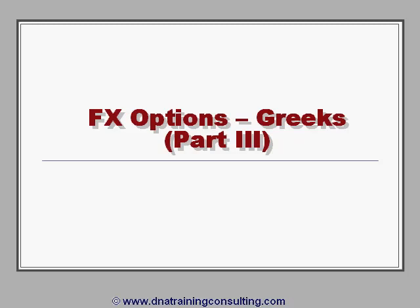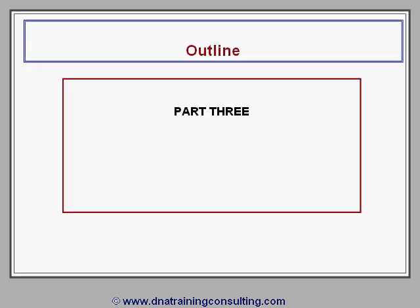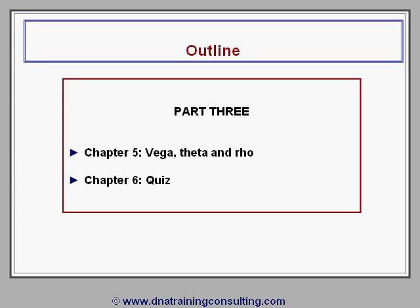This is the beginning of Part 3 of our module entitled FX Options Greeks, which examines in a formal way the factor sensitivities of FX options, often known as the Greeks because they are usually denoted with Greek letters by quantitative analysts. We remind you that this Part 3 contains Chapters 5 and 6, with Chapter 5 introducing Vega, Theta, and Rho — the principal remaining Greeks — and describing how a trader exploits these to express specific views, and Chapter 6 containing six quiz questions to test your understanding of the materials in this module.